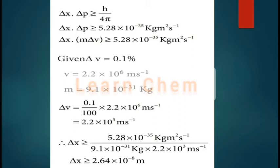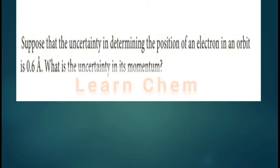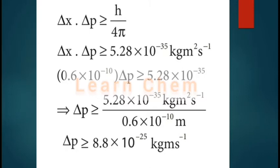The next problem: given the uncertainty in the position of an electron in an orbit is 0.6, find the uncertainty in momentum Δp. Using the same formula Δx × Δp ≥ h/4π, since Δx is given, we simply substitute the values to get the final answer.